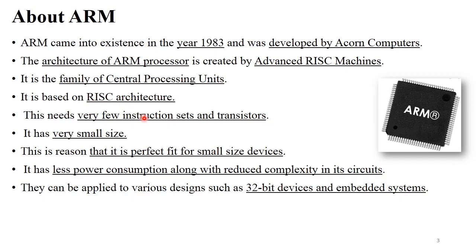Generally, the ARM processor is used in different mobiles, tablets, wearable devices, and other electronics devices because ARM has a very small size. ARM needs very few instruction sets and transistors, and it has less power consumption. That's why it provides better battery life to electronics devices. ARM supports 32-bit devices and 32-bit operating systems. So this is the introduction about ARM processor.